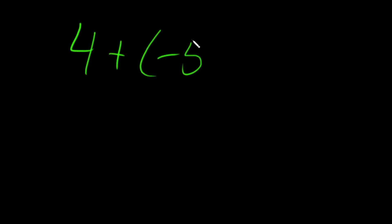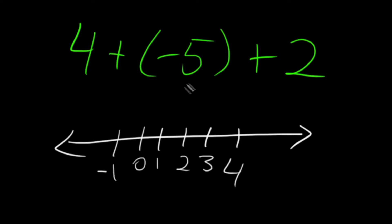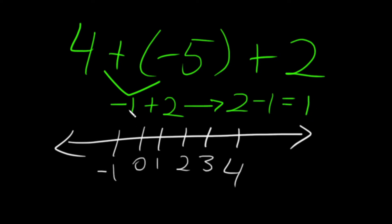Now what happens if we have three numbers to combine? For instance, 4 plus negative 5 plus 2. We can combine two numbers first, then finish with the third. Starting with 4 plus negative 5: on the number line, going left by 5 from 4 gives us negative 1. So we now have negative 1 plus 2. Switching the order, that's positive 2 minus 1, which equals 1. On the number line, starting at negative 1 and adding positive 2 means going right by 2, landing on positive 1.